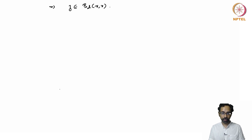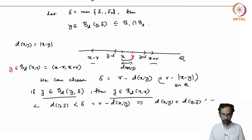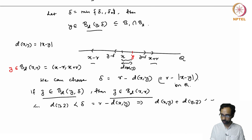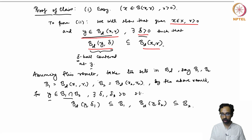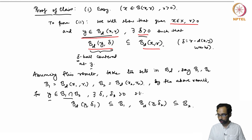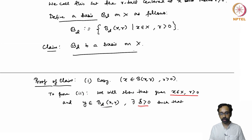So we have shown that for any point y in B_d(x,r), there exists a delta such that B_d(y,δ) is a subset of B_d(x,r), and here delta = r - d(x,y) works for the proof. Therefore our claim that B_d is a basis is established.